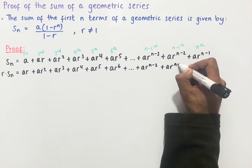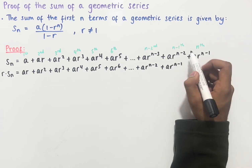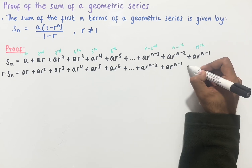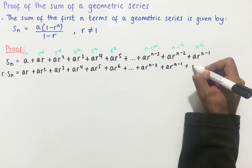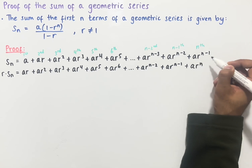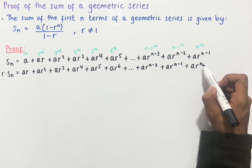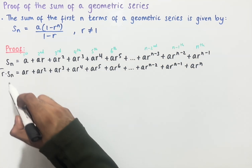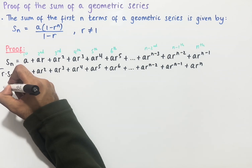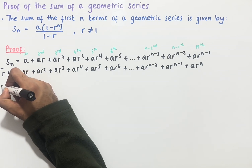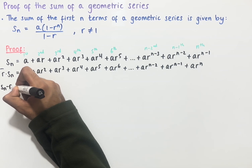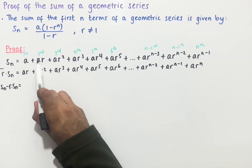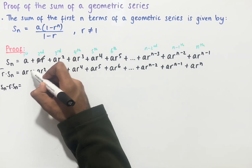Likewise we end up with ar to the power of n minus 1, because n minus 2 plus 1 gives us n minus 1, and then lastly we have plus ar to the power of n, because n minus 1 plus 1 gives us n. Now if we take away these sums from each other, on the left hand side we end up with Sn minus r times Sn, which equals... ar minus ar cancels.